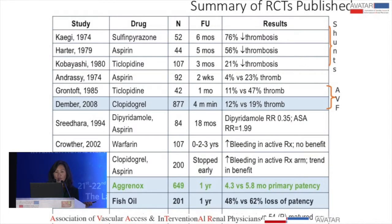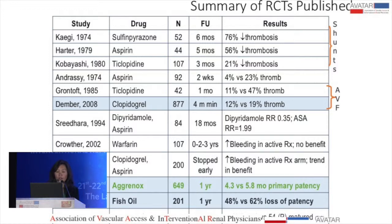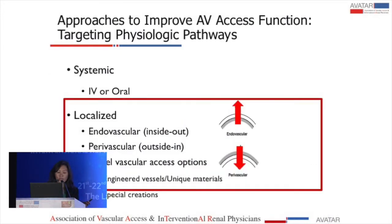Now let's quickly take a look at systemic options — I'm going to cover this in one slide. This is a summary of all the randomized controlled trials looking at oral agents to prevent vascular access dysfunction in more than 50 patients. There are only two key studies that have demonstrated any hint of benefit: the Aggrenox and fish oil studies, which demonstrated an improvement in primary patency or an improvement in the rate of loss of access thrombosis and interventions. In terms of oral and systemic therapies, we have further investigations to go.